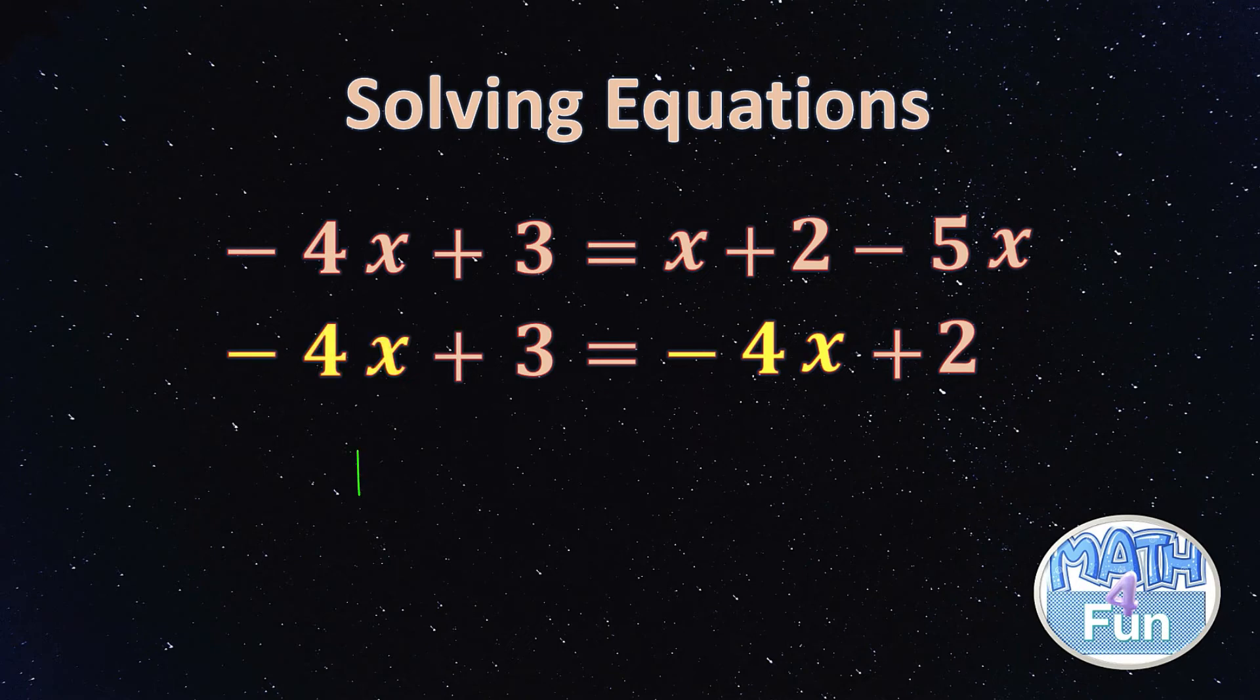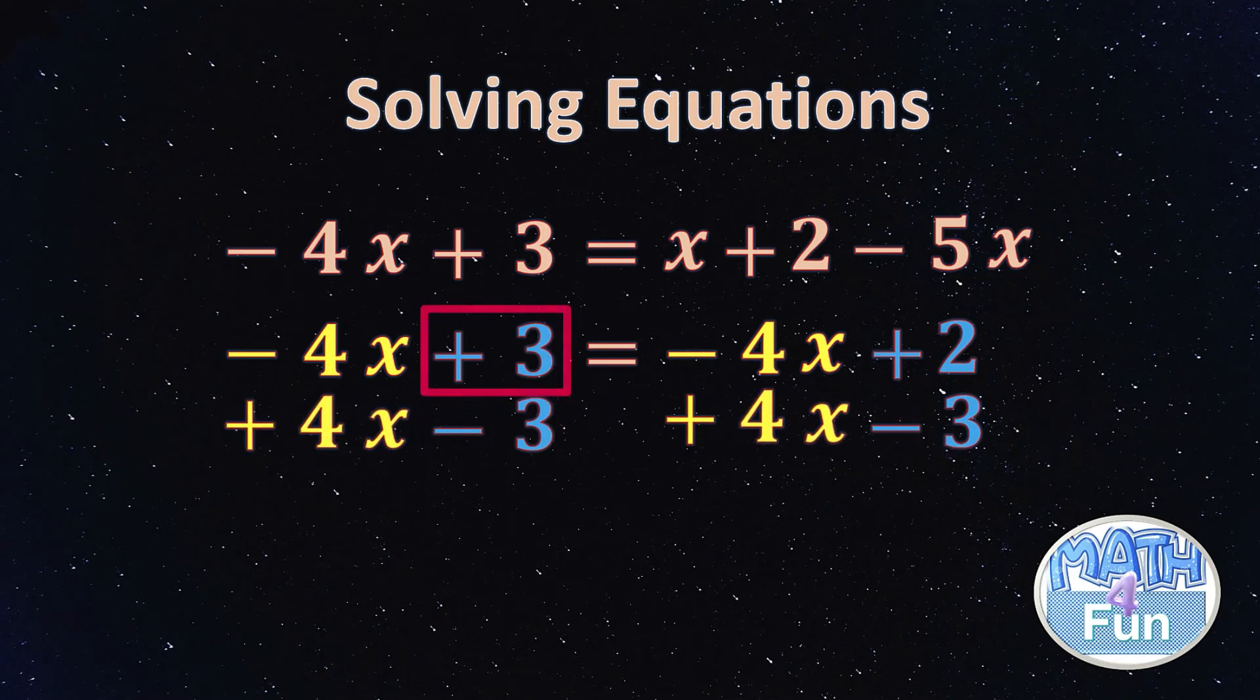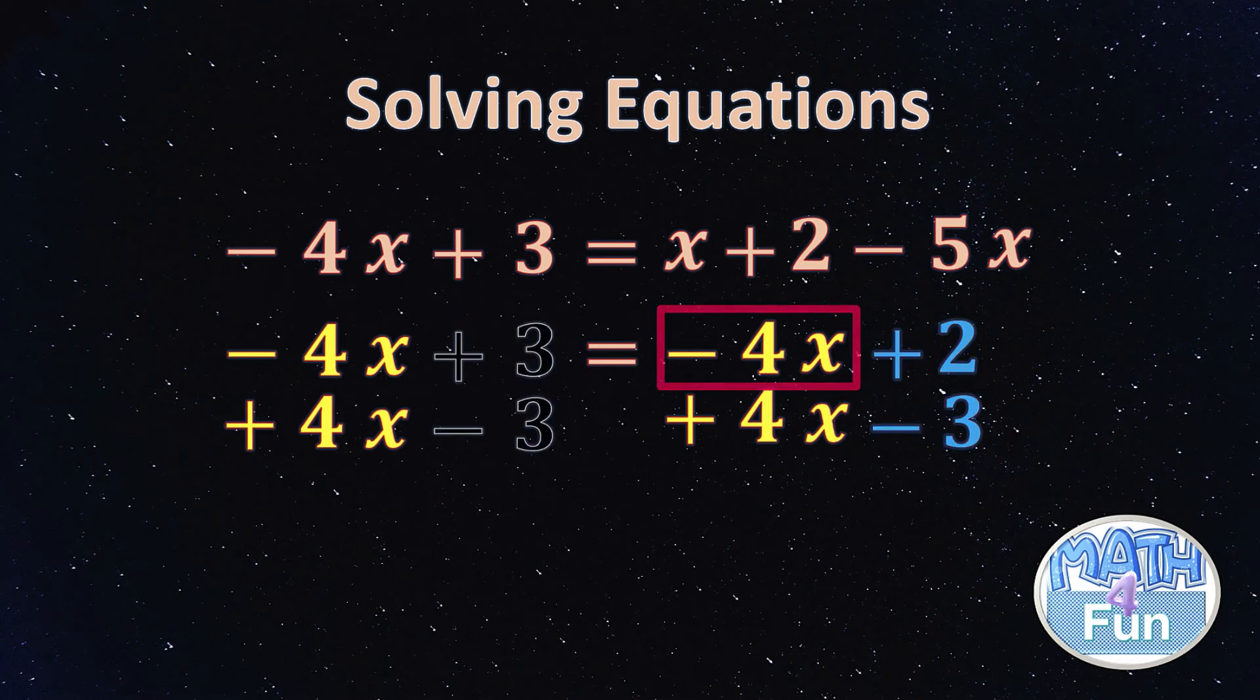Now we have -4x and -4x on each side, and we have 3 and 2 on different sides. What to do then? We can add -3 on each side to remove that 3 here, and we can also add +4x on each side to remove the negative 4x.